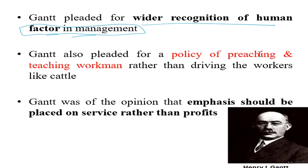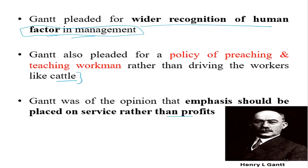Gantt also pleaded for the policy of preaching and teaching workmen rather than driving workers like cattle. He emphasized teaching workers about the working environment, and also getting suggestions from the workers themselves for improving the working environment.